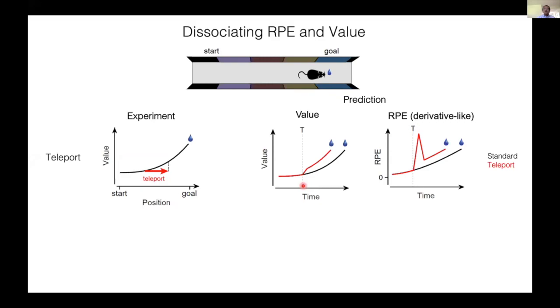Another important prediction is that the value should always be maximum at the goal location because there will be no more delay to reward at this point. And this does not have to be the case for TD error, and the RPE can exceed the maximum of the standard condition. This manipulation therefore makes qualitatively distinct predictions for value and TD error.